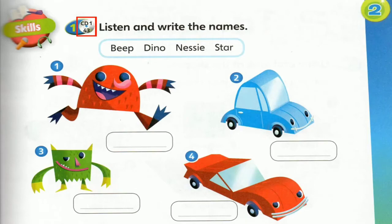My favourite toy is Nessie. Nessie's a red and pink monster. Nessie's friend is Dino. Dino's green and yellow. And Dino's small and ugly.